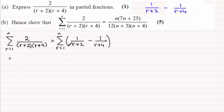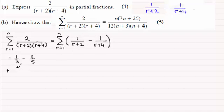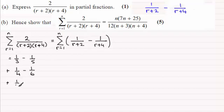When r is equal to 1, for the first term we're going to get 1 third, and for the second term it's going to be minus 1 fifth. Then we put r equals 2 and that gives plus a quarter, and then minus 1 sixth. We're looking for some kind of pattern where terms cancel one another out, but we can't see anything yet, so we'll do another term. Let r equal 3 and we're going to get 1 fifth minus 1 seventh.